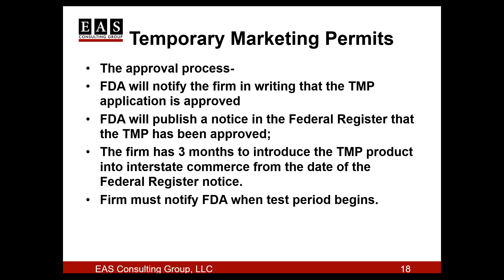Once FDA reviews the complete application, their decision on the TMP will be provided by a formal letter. At the same time, FDA will issue a notice in the Federal Register informing the public that the temporary marketing permit application has been approved. The test period begins on the date the person holding the TMP permit introduces the food covered by this permit into interstate commerce, but it can't happen any later than three months after notice of the TMP issuance is published in the Federal Register. The firm must notify FDA in writing of the date that their test market has actually begun.